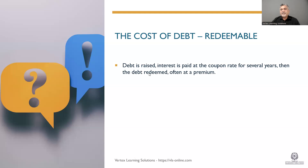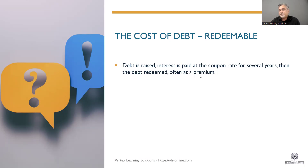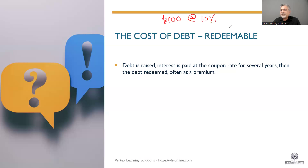The internal rate of return: when debt is raised, interest is paid at the coupon rate for several years — maybe five years — then the debt is redeemed, which means you return back the debt. Sometimes it is at a premium, which means a hundred dollar debt has a 10 or 20 percent premium. So you take a hundred dollar debt at say 10 percent for five years at a premium.